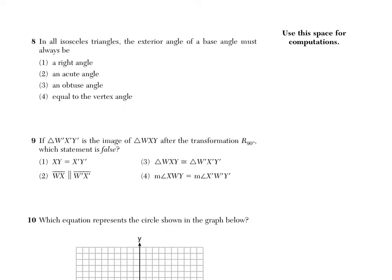Number 8 says, in all isosceles triangles, the exterior angle of a base angle must always be... and then we have to kind of fill in that blank there. When I see a question like this and there's no picture, I always love to draw one.